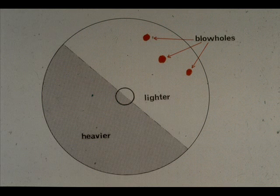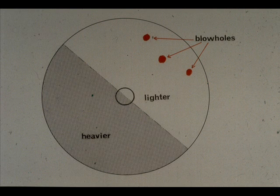The reasons for unbalance are many. Blow holes, like that shown here, are actually air pockets that formed in the wheel when it was being cast in the factory. This, in effect, creates a light spot, making this side of the wheel lighter than the opposite side.